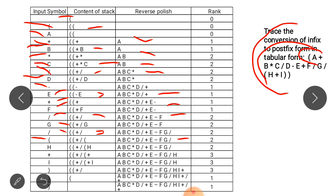Next is an opening bracket — left parenthesis. It is added to the stack. The left parenthesis has the lowest precedence value. Next H comes — H is an operand so it is added to the stack. Then plus comes — plus has lower precedence so it is pushed onto the stack.